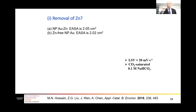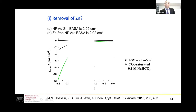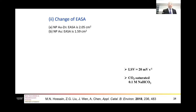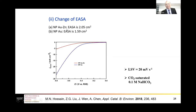To test these, we first fabricated nanoporous gold and nanoporous gold-zinc with very similar ECSA and compared activity. Although the ECSA is very similar, after removing zinc the activity is much higher, confirming that zinc removal helps enhance activity. For the ECSA factor, we also found that nanoporous gold with lower surface area still shows higher activity than nanoporous gold-zinc with higher surface area, so the ECSA change is not the main factor.